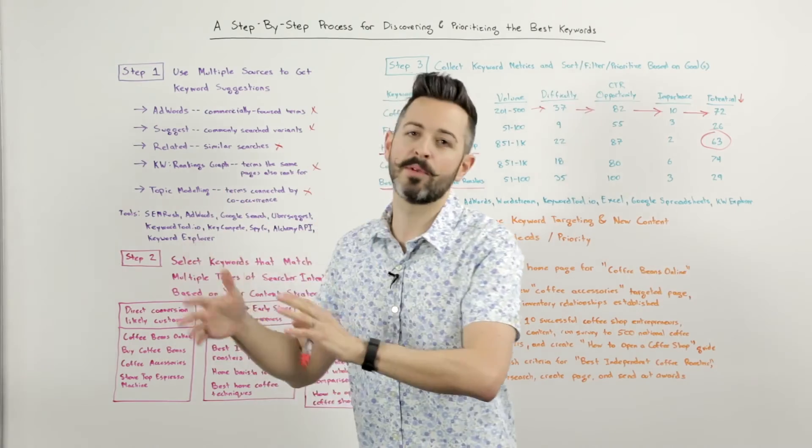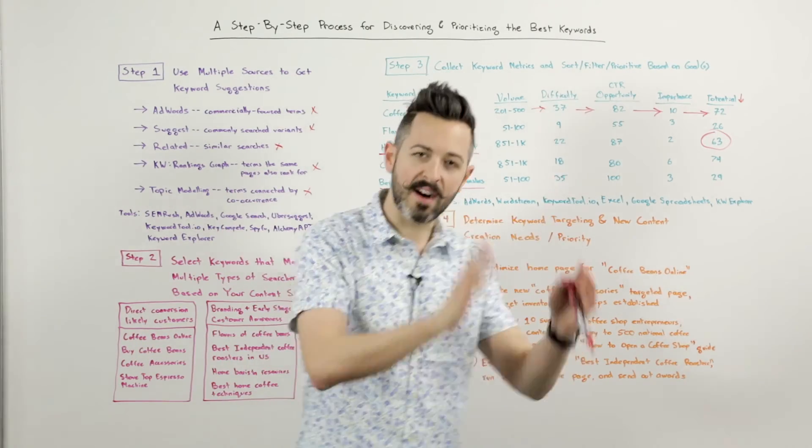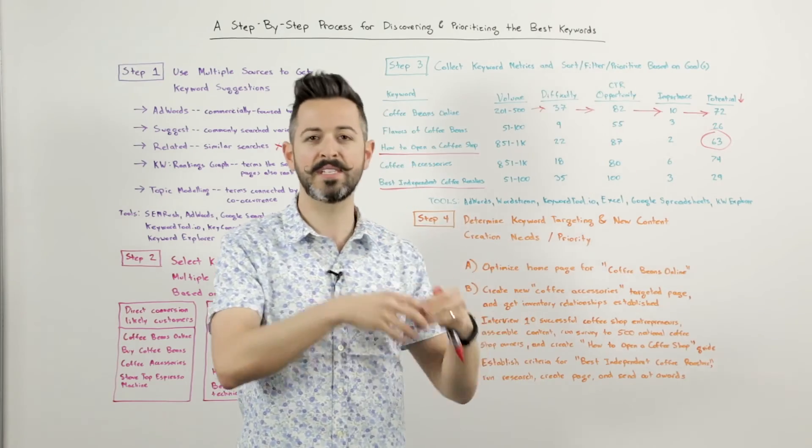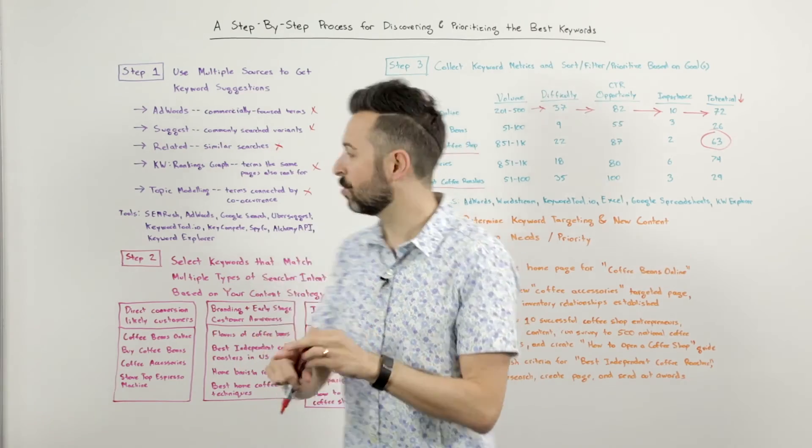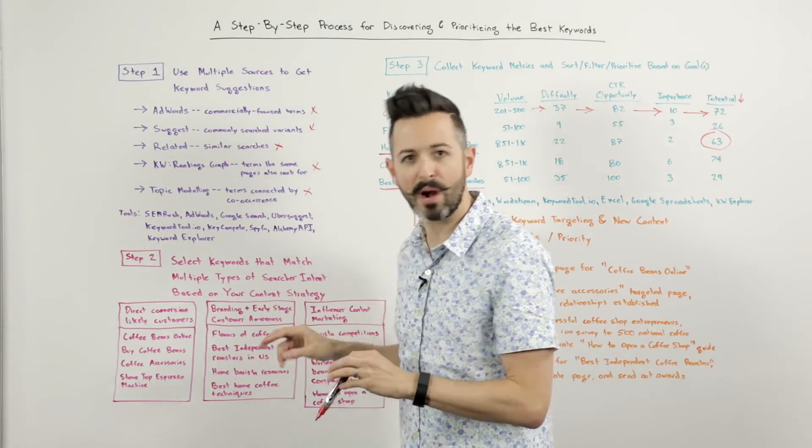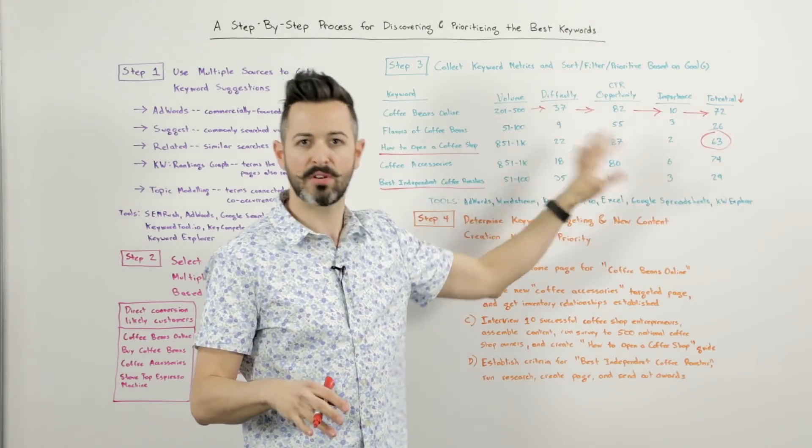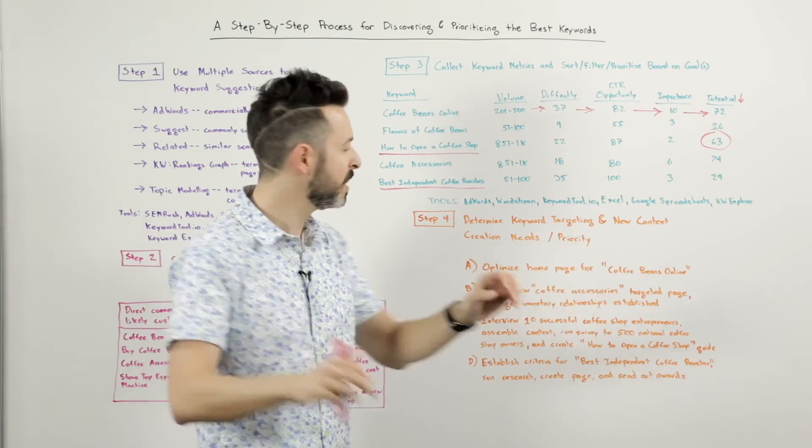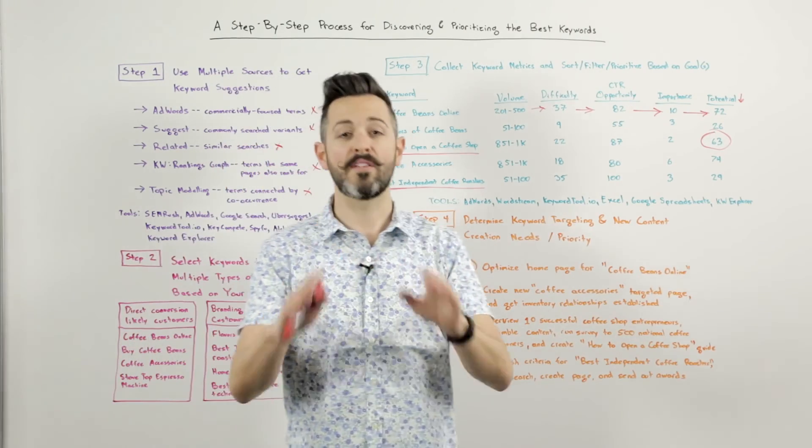This is a phenomenal way to go through keyword research and keyword targeting to get the content and the optimization priorities that you need for SEO. And I think if you choose the right data and the right tools, you use multiple sources, you intelligently build the right kinds of lists, you use metrics to prioritize and are data-driven rather than just pure intuition, and you prioritize your work based on this, you can have phenomenal success.